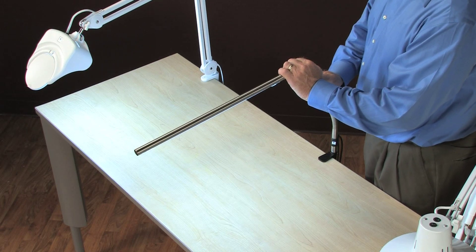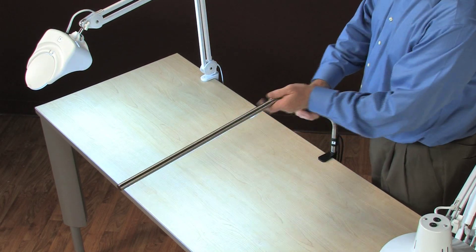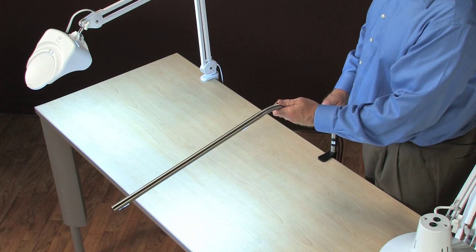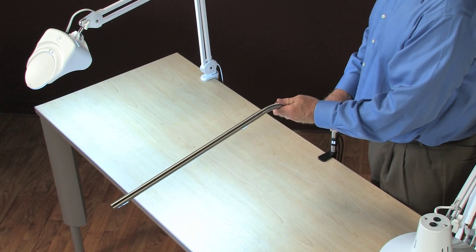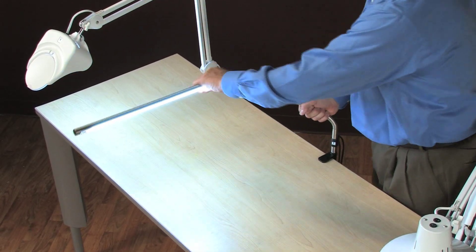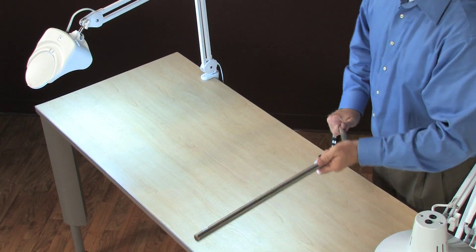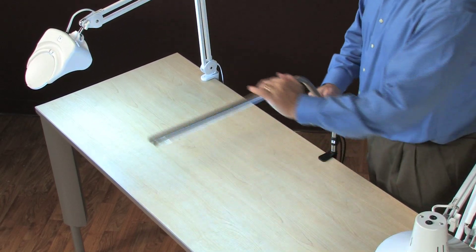The slimline table lamp features a stainless brushed chrome finish that complements any modern workplace or home. It has two flexible joints and can be moved and configured into almost any position simply by redirecting the light.